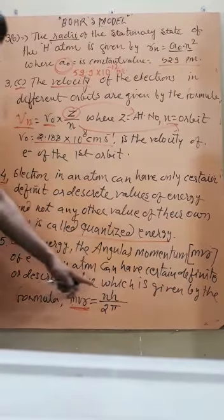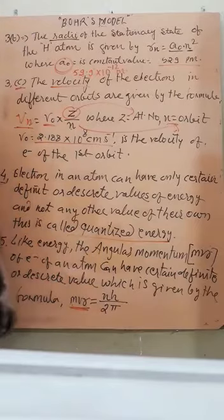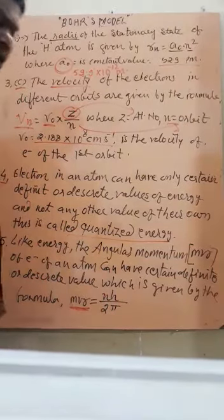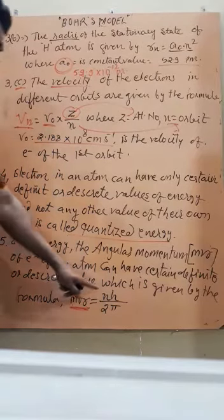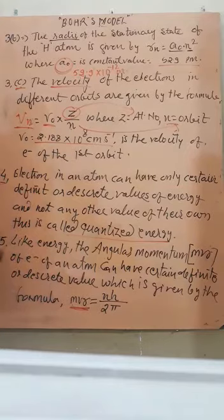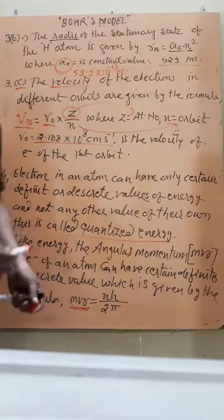This angular momentum is given by mvr is equal to nh upon 2π. Here n is again number of orbit: 1, 2, 3, 4. That is, for second orbit it will become 2h upon 2π, for third orbit it will become 3h upon 2π, and so on. This is about the next postulate. In the next video, we will see other postulates.